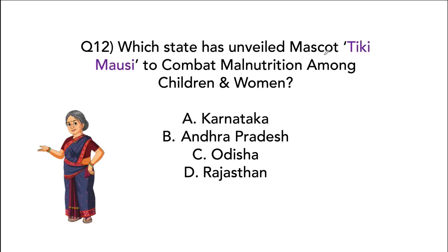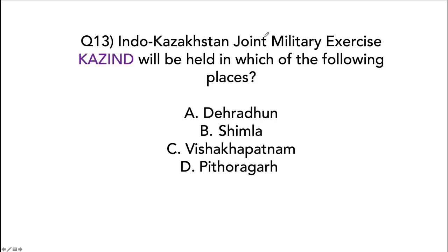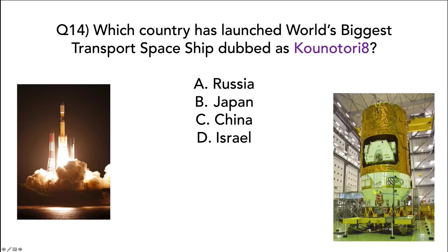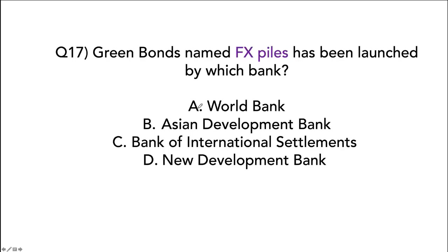Odisha has unveiled a mascot called Tiki Mossi to combat malnutrition among children and women. The Indo-Kazakhstan Joint Military Exercise called Kaizind will be held in Pithoragad, Uttarakhand. Japan has launched the world's biggest transport spaceship called Kounotori. Green bonds called FX Piles have been launched by the Bank for International Settlements.